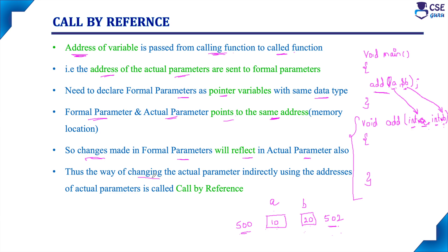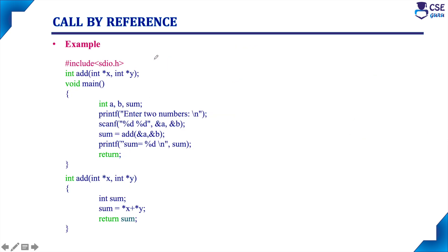Both actual parameter and formal parameter point to the same address — they share the same memory location. So changes made in formal parameters will reflect in actual parameters, since both point to the same memory location. Thus, the way of changing the actual parameter indirectly using the address of actual parameter is called called by reference. It is referring to its address, not the value — whatever manipulations we do, we do with its address, but indirectly it takes the value stored there. This technique is called called by reference, and it is mainly a theoretical technique. Most programming languages do not use call by reference practically — it is only implemented in Java.